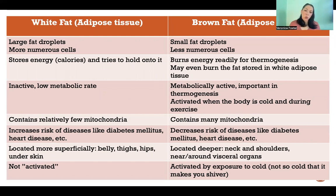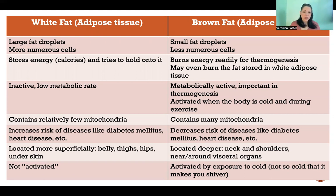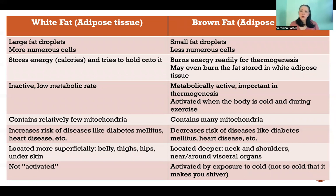Having too much white fat increases risk of diseases like diabetes mellitus, heart disease, and so on. If we are obese or have too much adipose tissue, it leads to risk of all sorts of different conditions — but in that case, we are referring specifically to white adipose tissue. Brown adipose tissue has the opposite effect. We can have as much as we want, and it actually has protective effects and decreases risk of those same diseases.